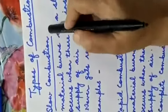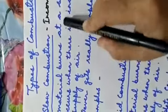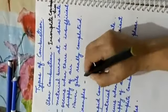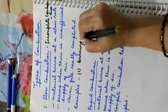The first type is slow combustion, also known as incomplete combustion. Here the combustible material burns at a slow rate, and it occurs only when there is insufficient or limited supply of air — it never gets completely finished. Examples of slow combustion are burning of cow dung cakes and burning of wood.